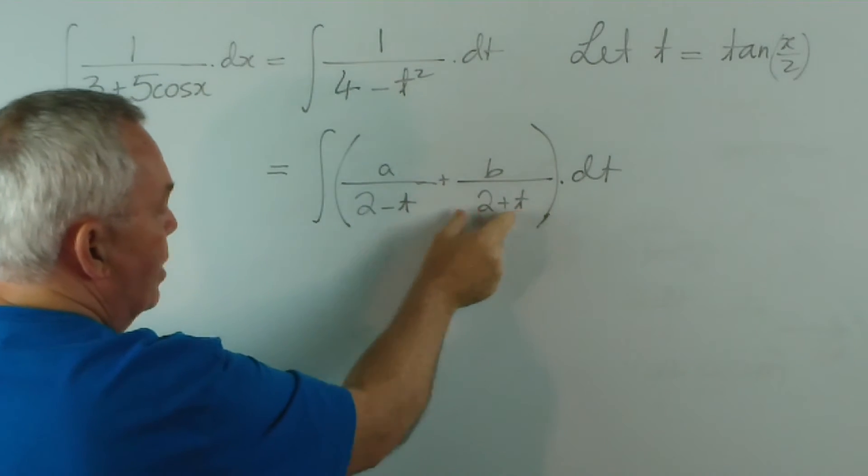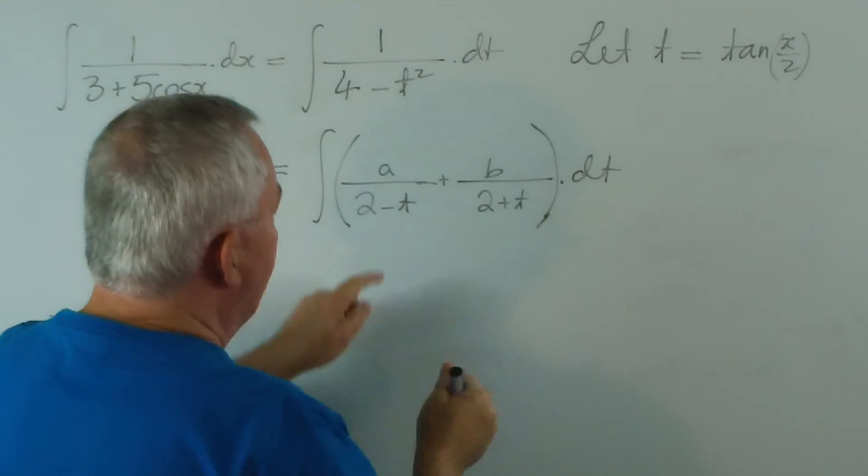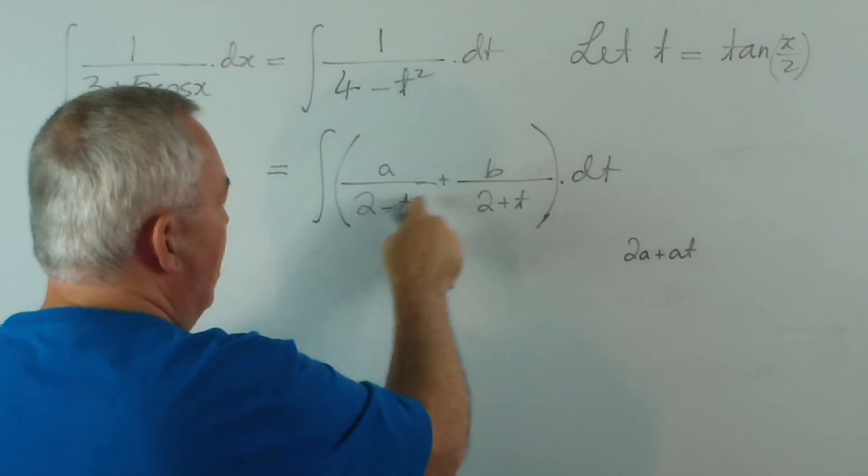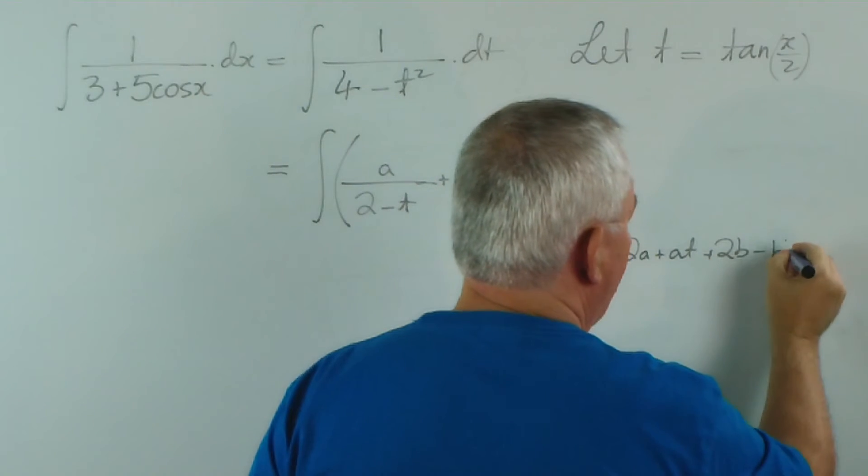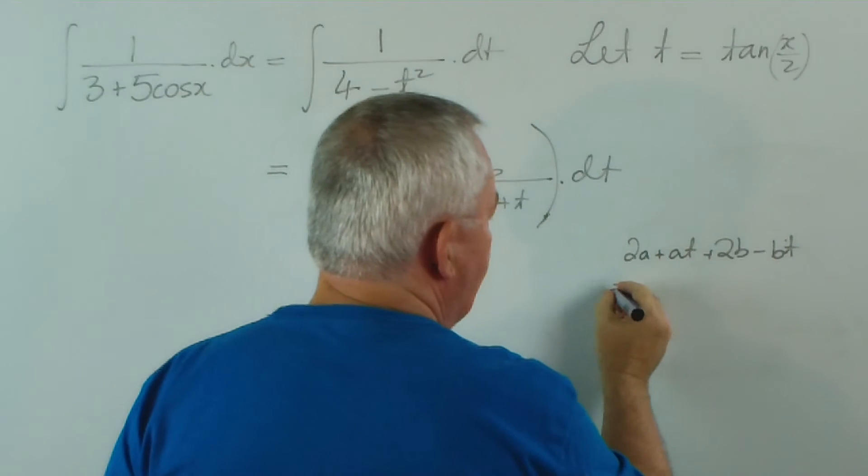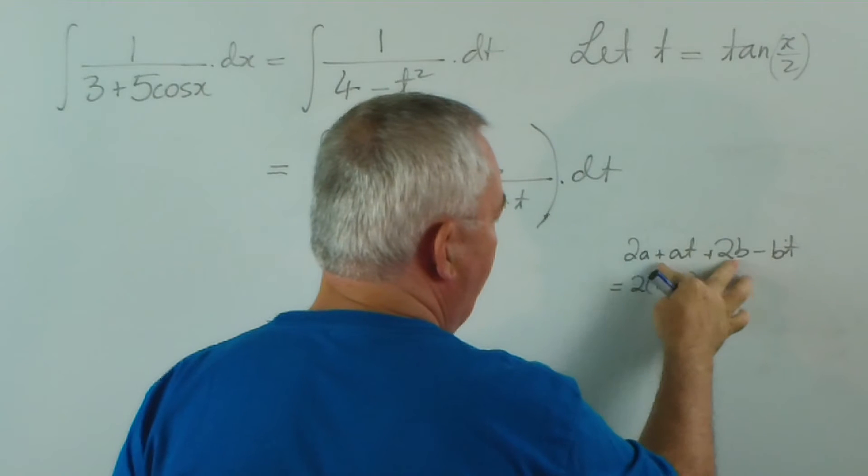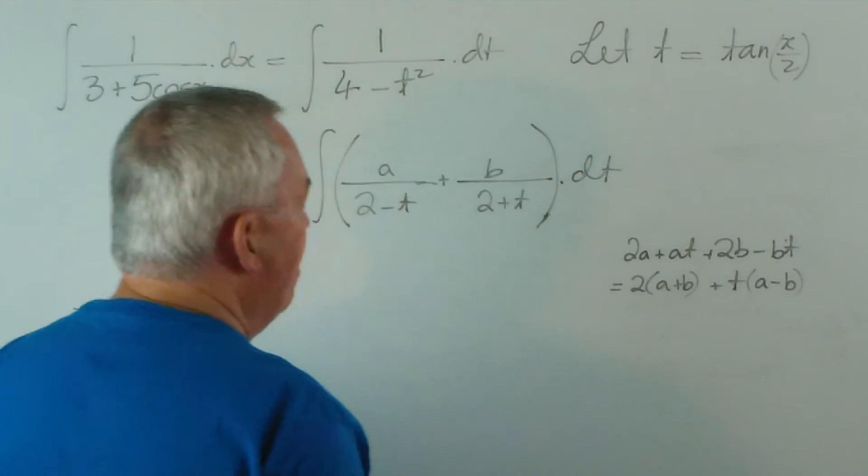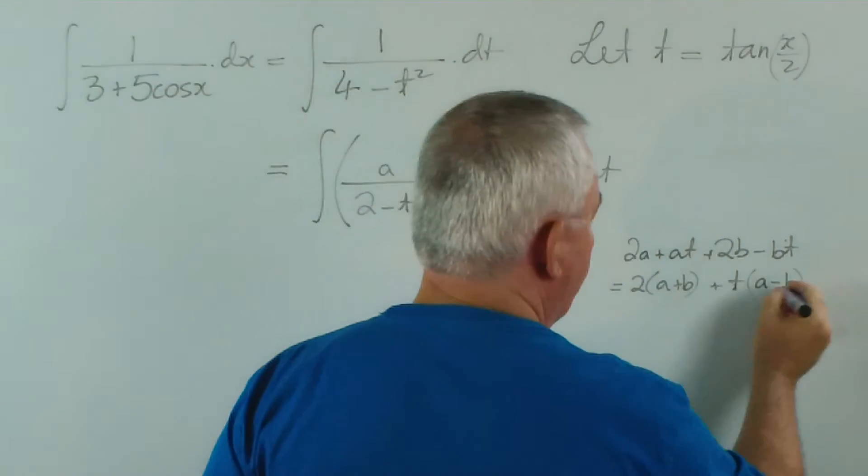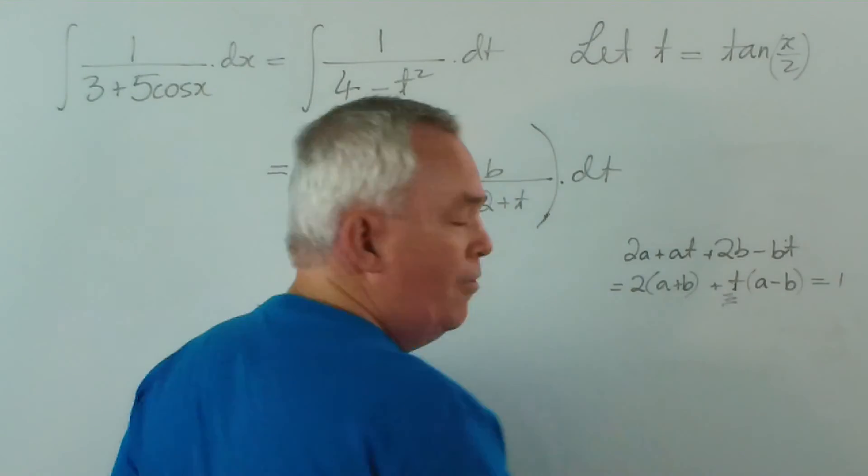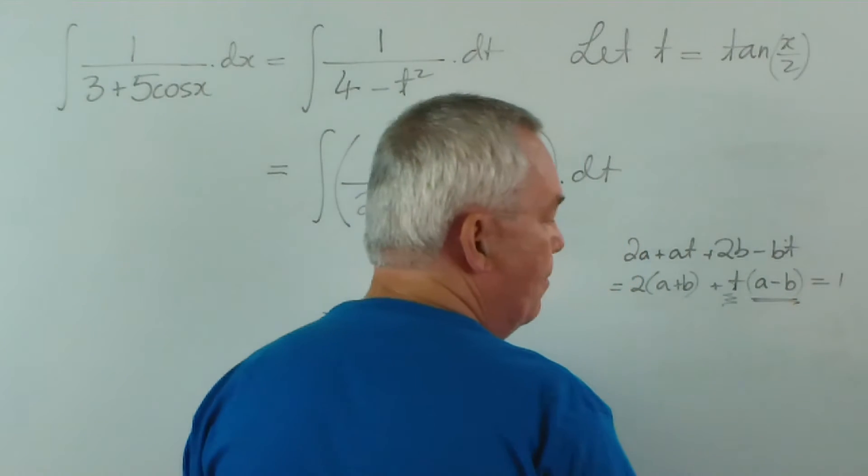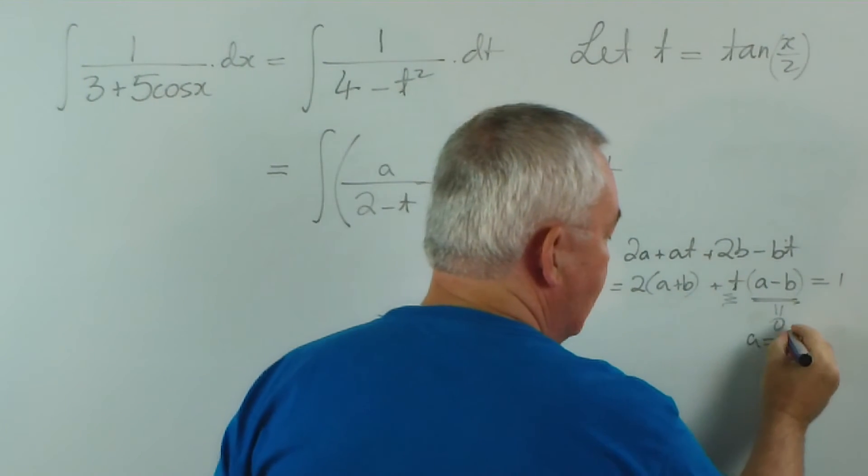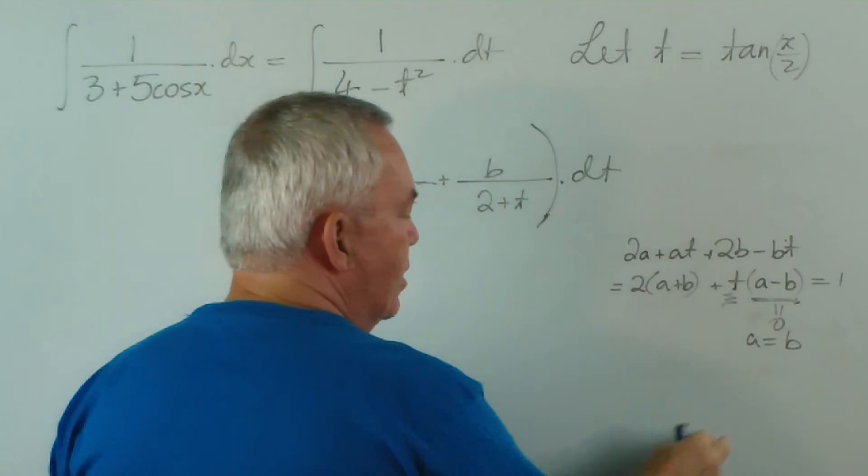Now, let's find the values of a and b. The denominator is going to be 2 plus t times 2 minus t, 4 minus t squared. The numerator is going to be a times 2 plus t, so it'll be 2a plus at, and b times this, 2b minus bt. That's going to be 2 lots of a plus b and, taking t out of the common factor, t lots of a minus b. This numerator has to equal 1. Well, we don't want any t values in our answer. So this must be worth 0. If a minus b is 0, then a must equal b. That's our first clue.